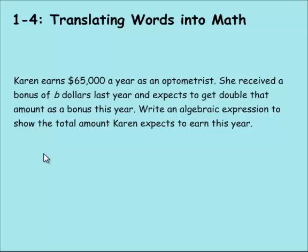She earned $65,000 a year no matter what, so we can start with that. She received a bonus of B dollars last year. So last year she received $65,000 plus whatever her bonus was. She expects to get double that this year, so we're going to put 2 times B. We're not going to multiply the whole thing times 2 because that would be a really big salary. She just gets her bonus doubled, so we put the 2 in front of only the B. So $65,000 plus 2B is the algebraic expression that gives us the amount Karen will earn this year.